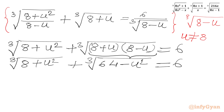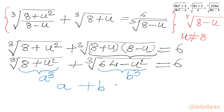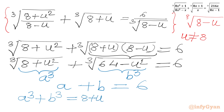So: cube root of (8 plus u²) plus cube root of (64 minus u²) equal to 6. Now we will use substitutions. Let the first radicand 8 plus u² equal to A³, and 64 minus u² equal to B³. So the very first equation we can write is A plus B equal to 6. Adding both expressions: A³ plus B³ equals 8 plus u² plus 64 minus u², and the u² terms cancel, giving us our second equation A³ plus B³ equal to 72.